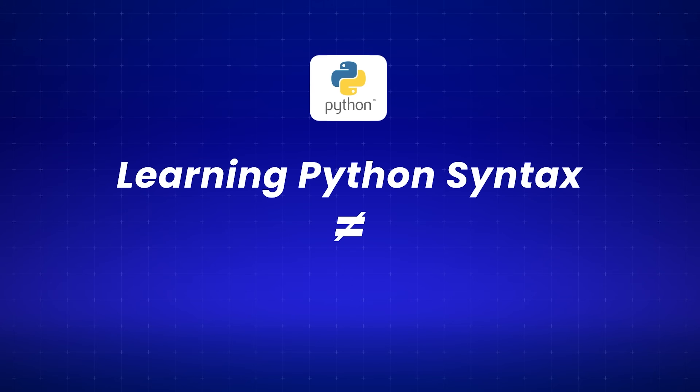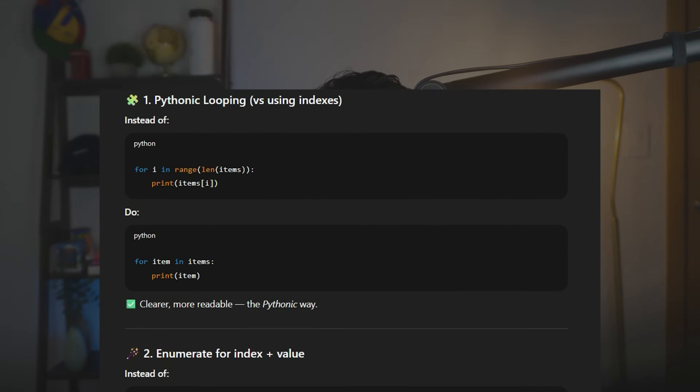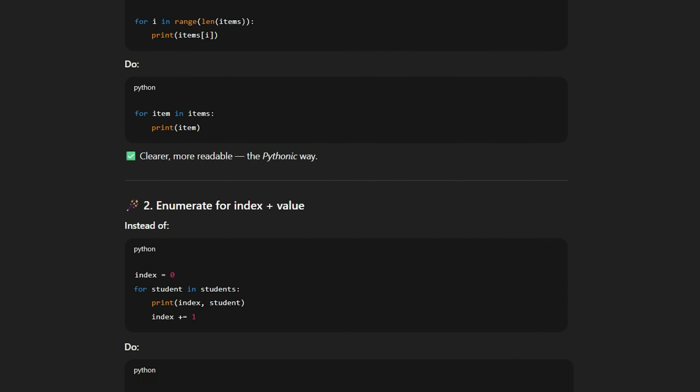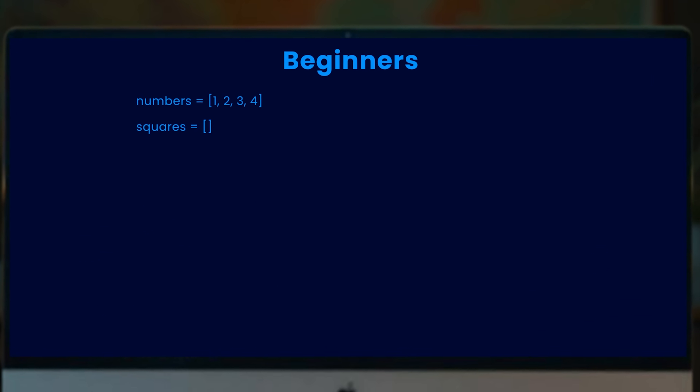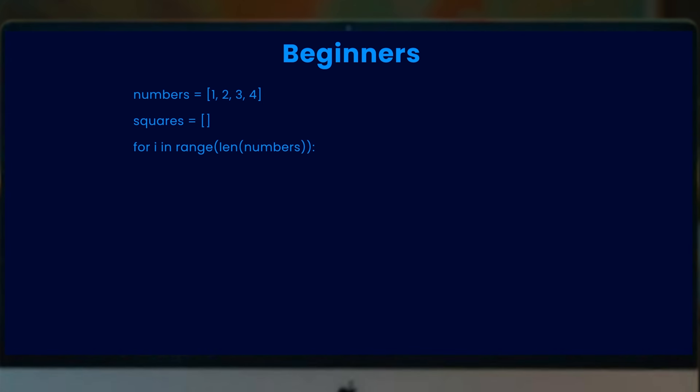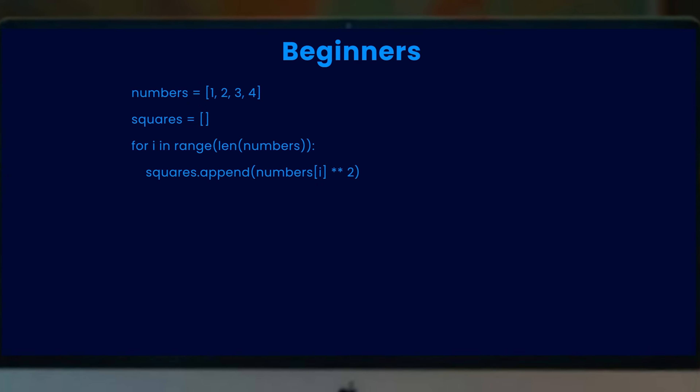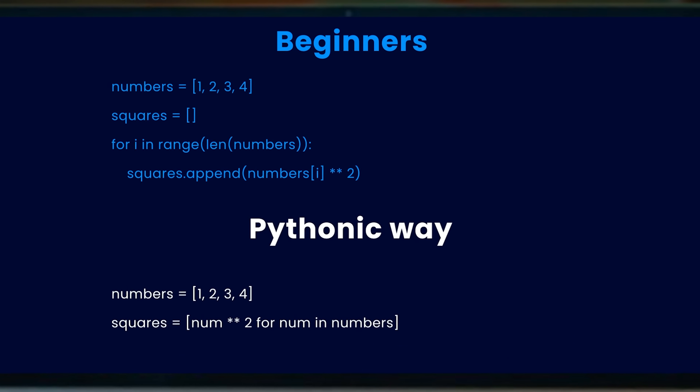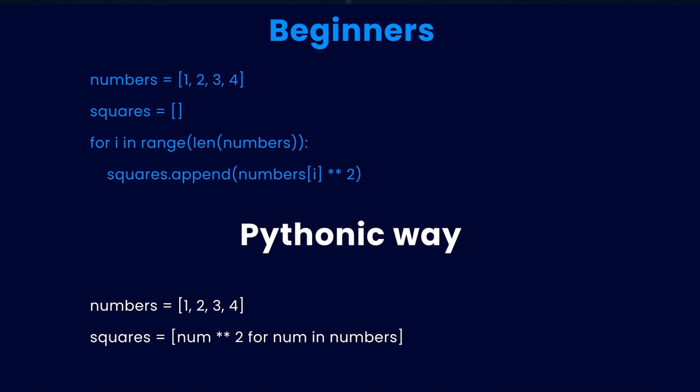But here is something nobody tells you: learning Python syntax is not the same as learning Python. Most people coming from a Java or C++ background write Python code that looks like Java written in Python syntax. That's a mistake. Python has its own idioms and patterns that make your code faster and cleaner. New Python programmers write loops by creating an empty list, looping with range and index, then appending to the list. This works, but it's not Pythonic. A Python programmer would use a list comprehension instead — one line of code that's easier to read and runs faster.